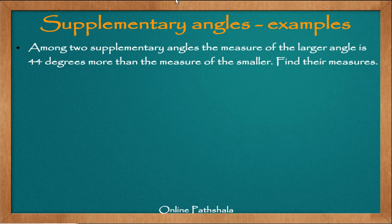Now let us look at an interesting example which involves supplementary angles. Let's go through the example. Among two supplementary angles, the measure of the larger angle is 44 degrees more than the measure of the smaller. Find their measures. We are given one piece of information and we'll try to create algebraic equations using them and solve the problem.